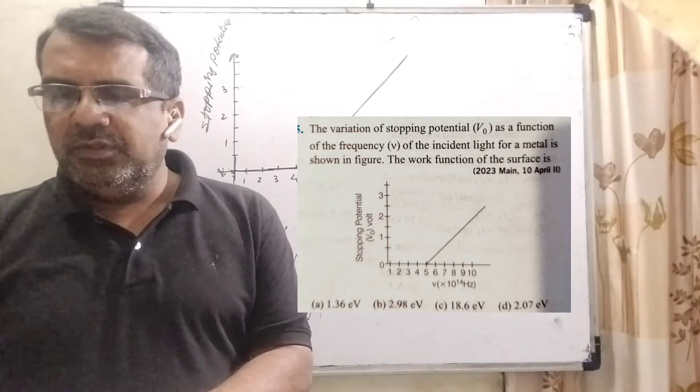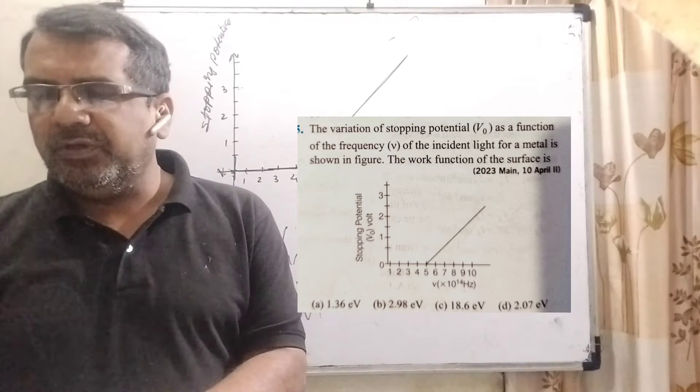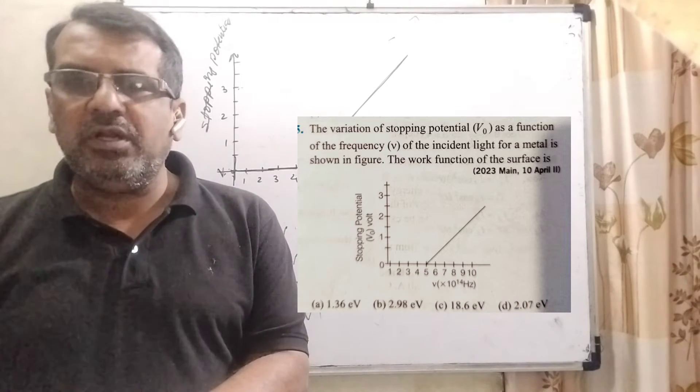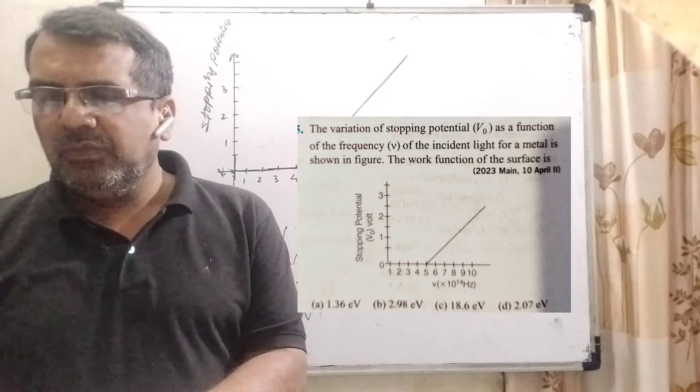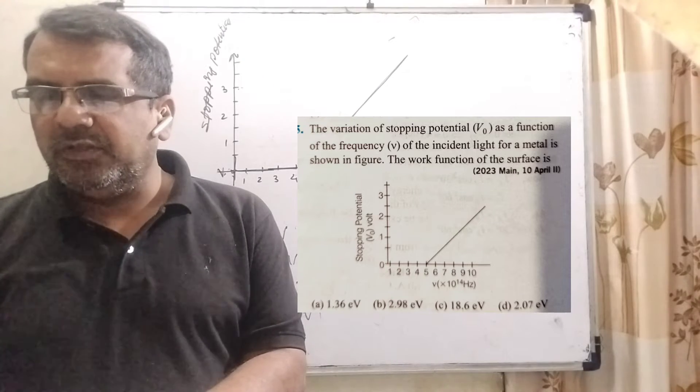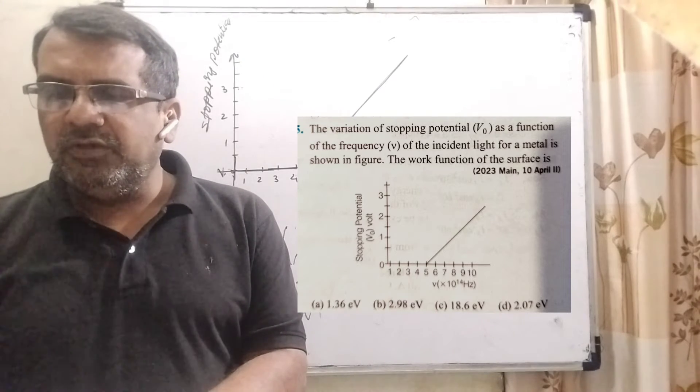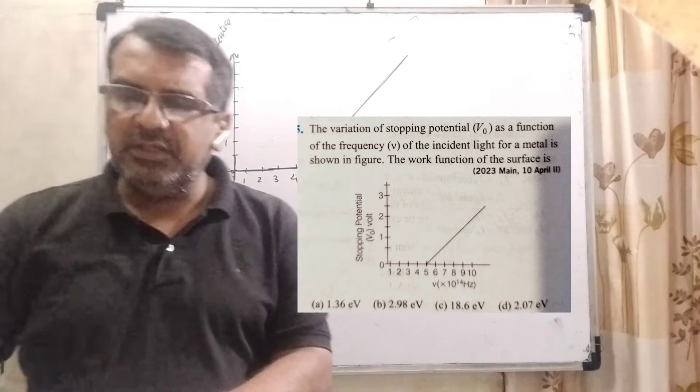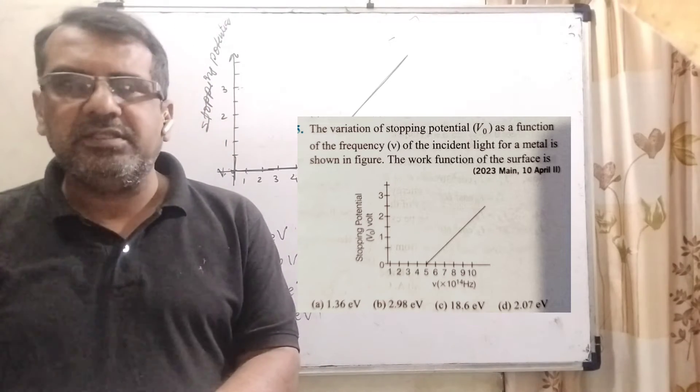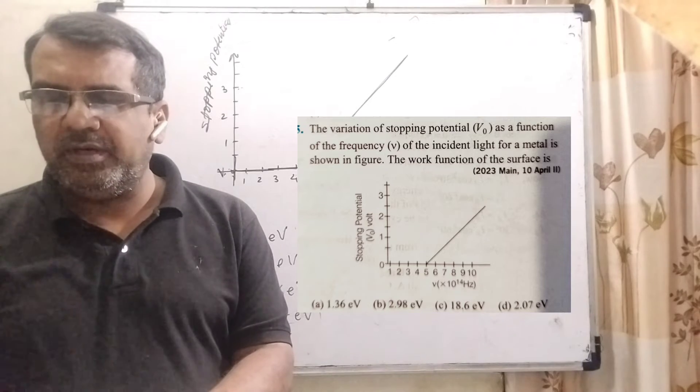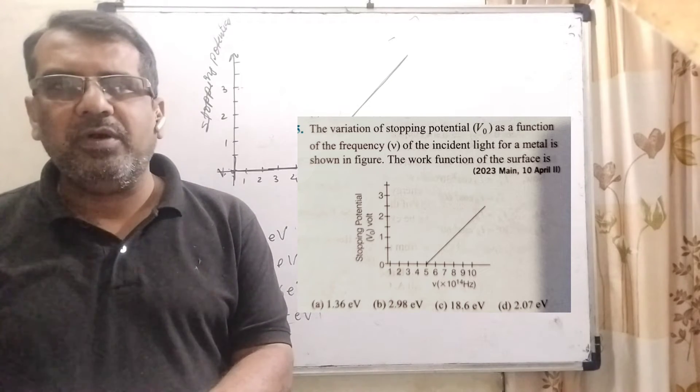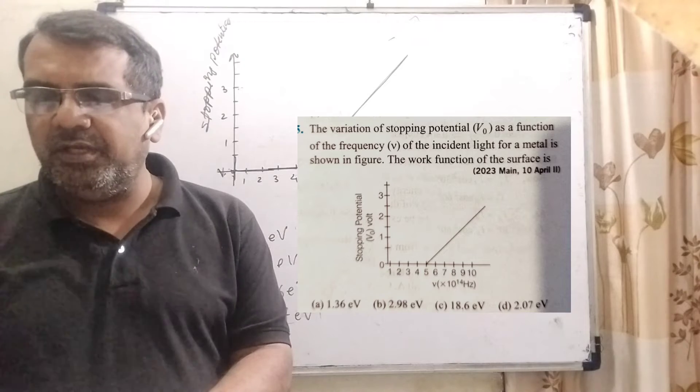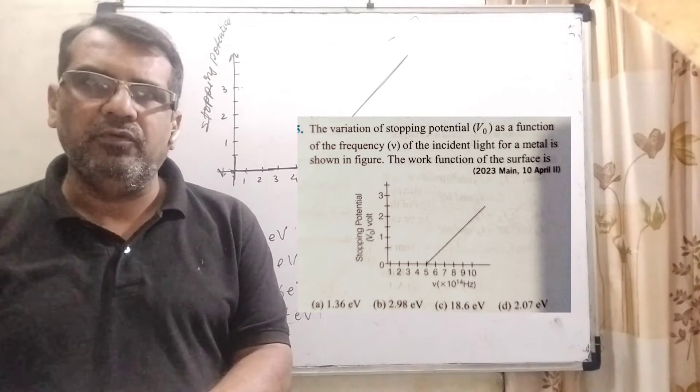Now here is the question. The variation of stopping potential V0 as a function of frequency ν of the incident light for a metal is shown in the figure. The work function of the surface is: Option A is 1.36 electron volt, Option B 2.98 electron volt, Option C 18.6 electron volt, and Option D 2.07 electron volt.